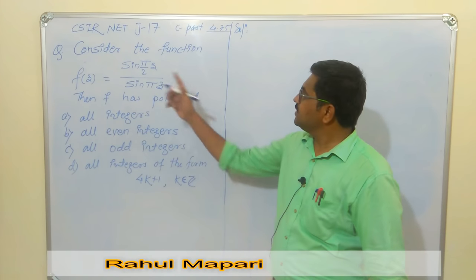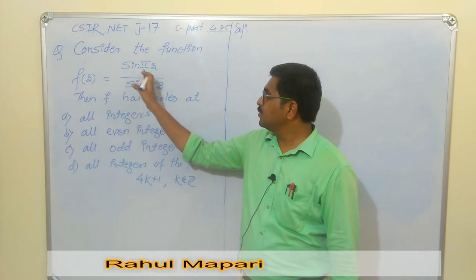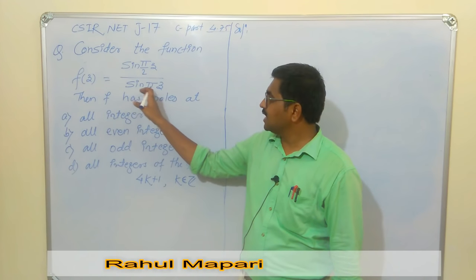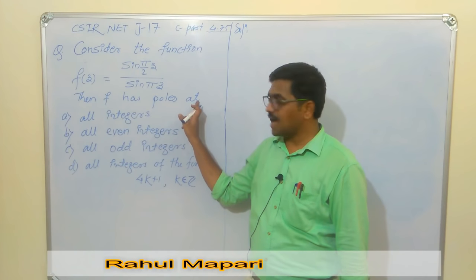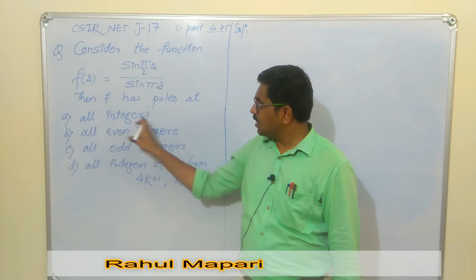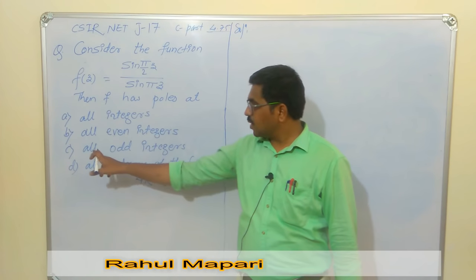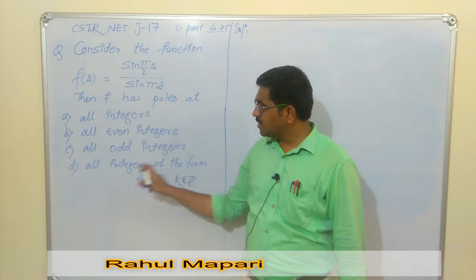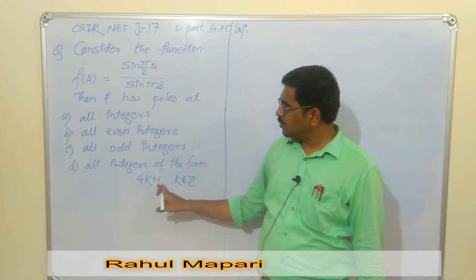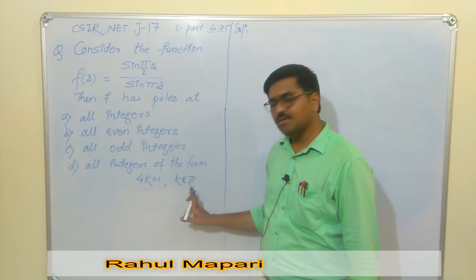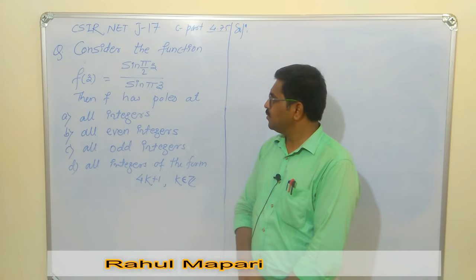The question is: consider the function f(z) = sin(πz/2) / sin(πz). Then f has poles at — option A: all integers, option B: all even integers, option C: all odd integers, option D: all integers of the form 4k+1 where k is an integer. So this is a question about singular points.